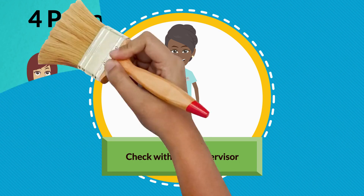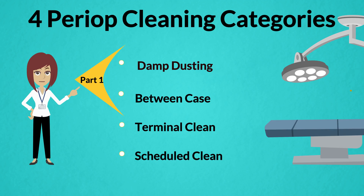There are four different cleaning categories in the perioperative areas. First case damp dusting and between case turnover clean were covered in Part 1. Terminal clean and scheduled cleaning — cycle cleaning — will be covered in this video.